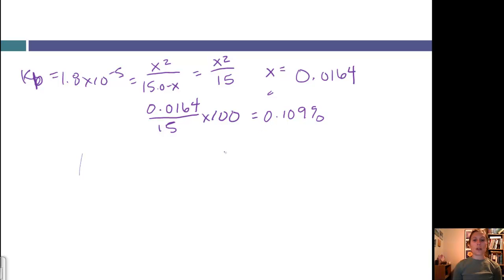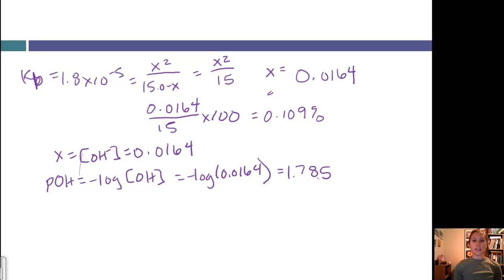Now I want to solve for the pH. This X value is equal to the OH concentration, which is equal to 0.0164. The pOH is equal to negative log of the OH concentration, which is equal to negative log of 0.0164. That gives me 1.785. Since I know that pH plus pOH is equal to 14, 14 minus 1.785 will give me my pH, which equals 12.215.